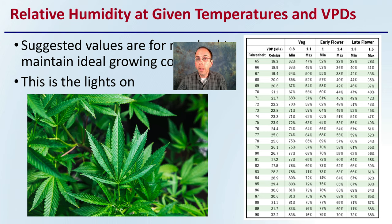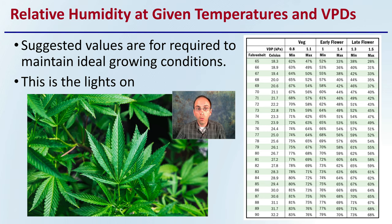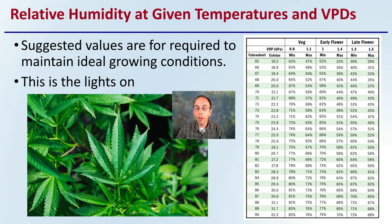Relative humidity at given temperatures: suggested values are required to maintain ideal growing conditions. This is when the lights are on. This gives you a Fahrenheit and Celsius temperature reference alongside humidity levels, looking at those target VPD ranges expressed earlier. It gives you a good general target range to be aiming for.